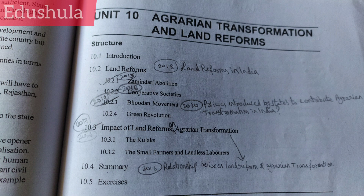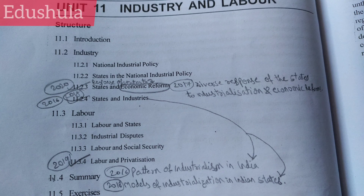Impact of land reforms on agrarian transformation. Relationship between land reform and agrarian transformation. Co-operative societies. From Unit 11: States and Economic Reforms. Diverse response of the states to industrialization and economic reforms. Pattern of industrialism in India. Models of industrialization in Indian states. Labor and privatization.